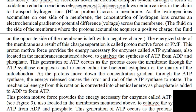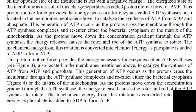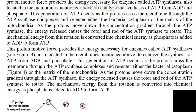As protons move down the concentration gradient through ATP synthase, the energy released causes the rotor and rod of ATP synthase — the F0 domain — to rotate. The mechanical energy from this rotation is then converted into chemical energy as phosphate is added to ADP to form the ATP molecule.